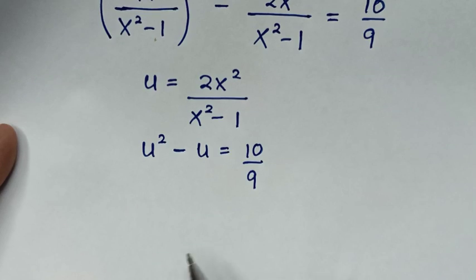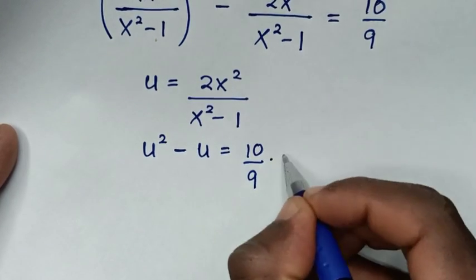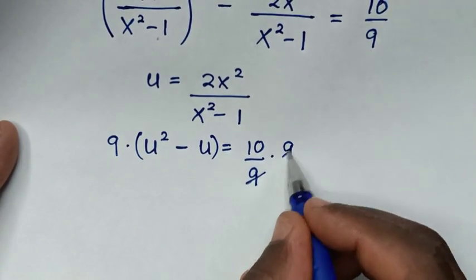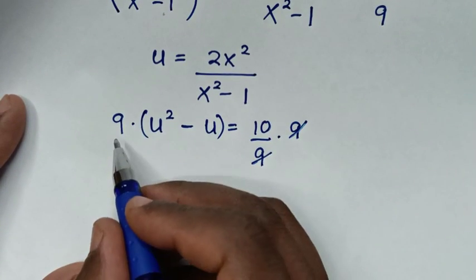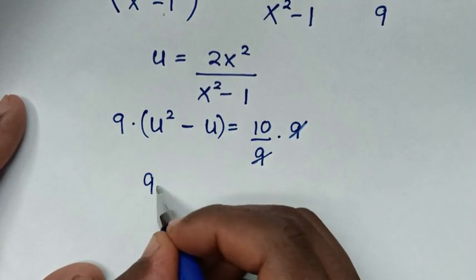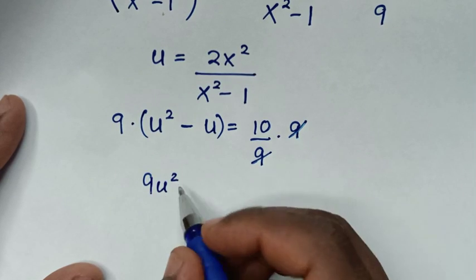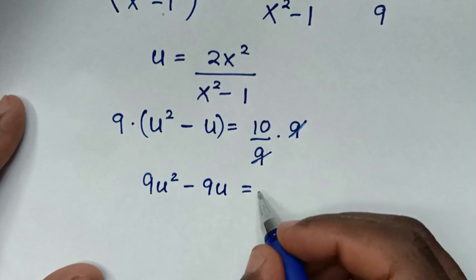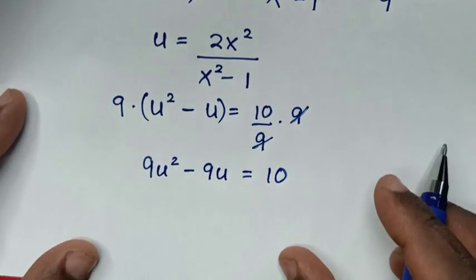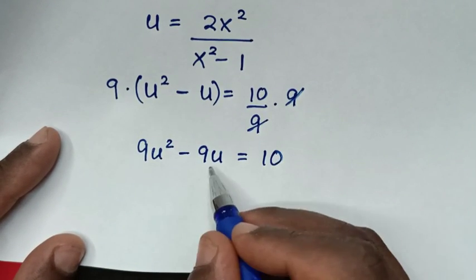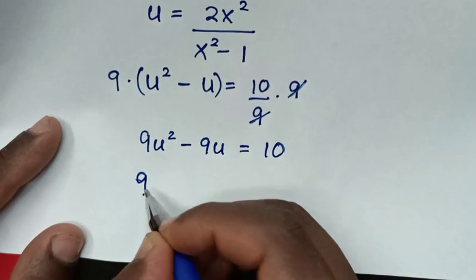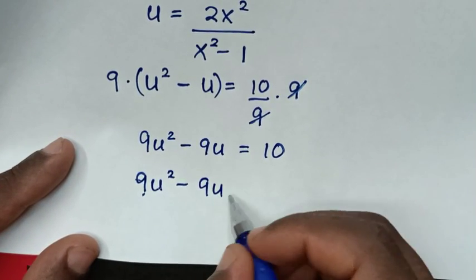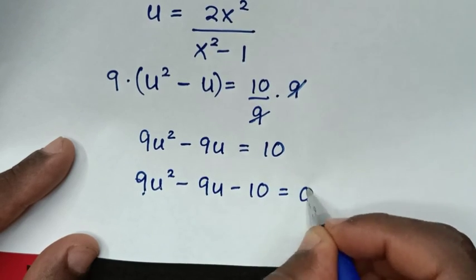To remove the fraction, we multiply both sides by 9. The 9s cancel, giving 9u squared minus 9u equals 10. Taking 10 to the other side gives 9u squared minus 9u minus 10 equals 0.